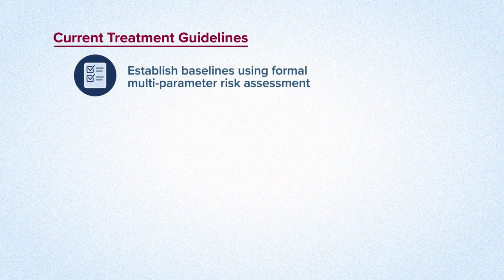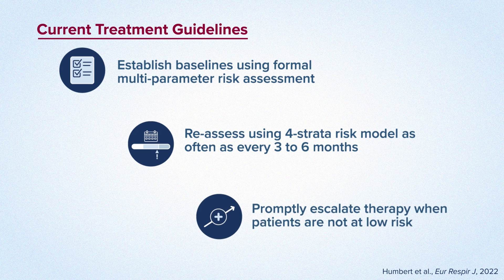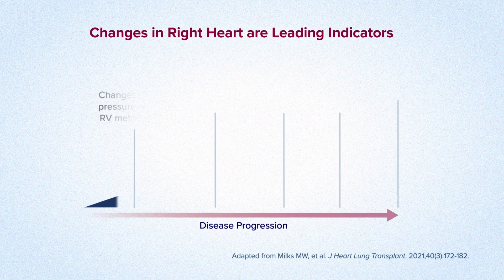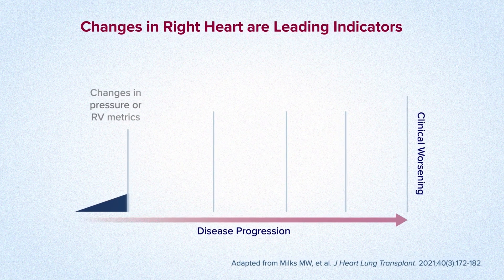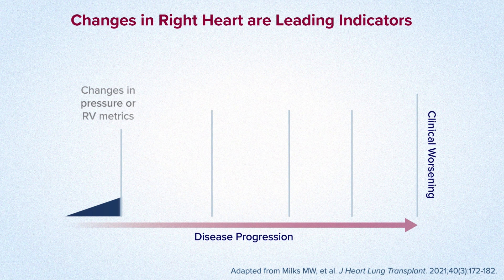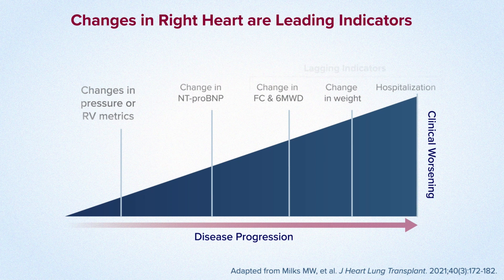Current treatment guidelines recommend multi-parameter risk assessment at baseline, with follow-up risk assessment as often as every three months. Prompt therapy adjustment is recommended when patients are not at low-risk status. In addition, it is imperative to monitor the early or leading signs of disease changes. In PAH, changes in right heart function precede changes in other parameters, such as exercise tests and functional class, the latter often referred to as lagging indicators.